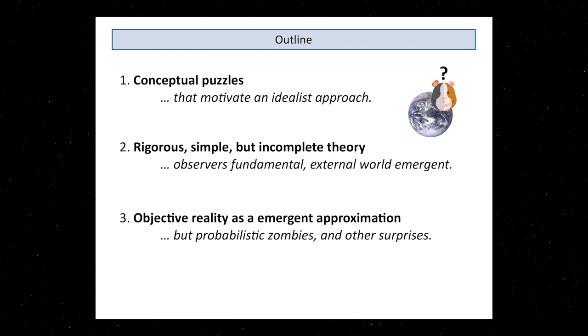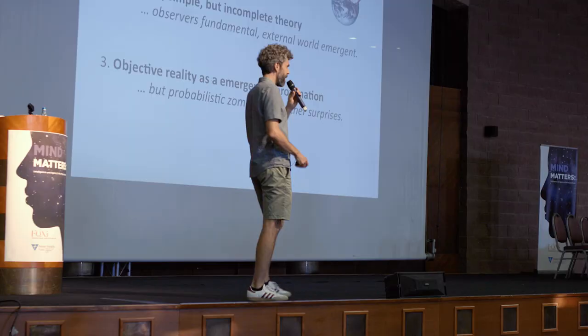Also in the third part, I will show you that you can have something like objective reality, not as something that you assume from the beginning, but as something that you can prove as a theorem, as a statistical long-term consequence. Also there will be some fun surprises in the end, something like probabilistic zombies for example.